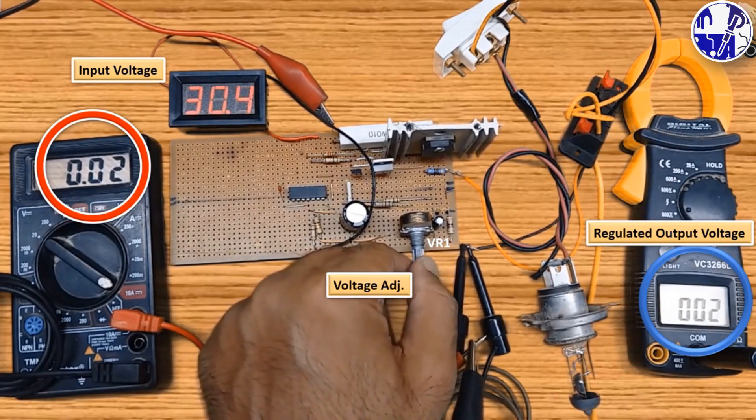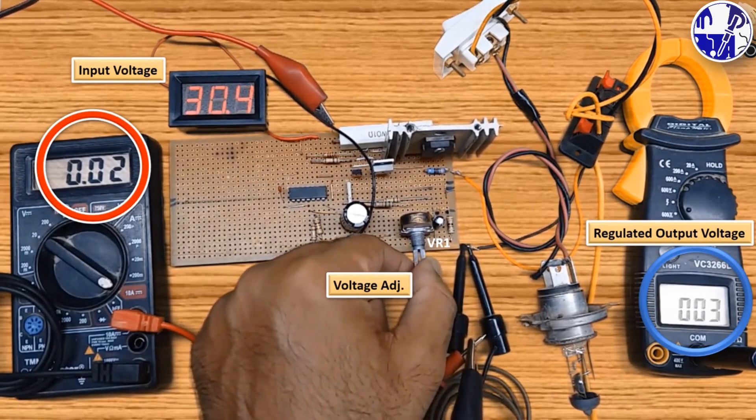VR1, a 5 kilo ohm variable resistor, adjusts the output voltage.